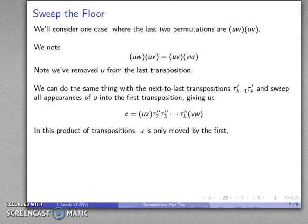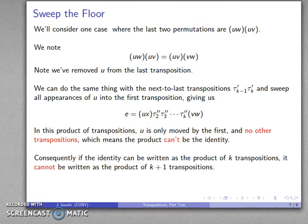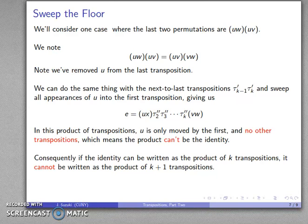Now we have a problem. In this product of transpositions, U is only going to be moved by the first transposition. None of the other transpositions move U, so U stays in place and then it's moved by this one — but that can't possibly be the identity. And so we have our result: if I can write the identity as a product of K transpositions, I cannot write it as the product of K plus 1 transpositions. And there's our proof.